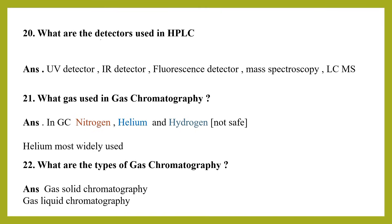What are the detectors used in HPLC? The detectors used are UV detector, IR detector, fluorescence detector, and mass spectroscopy.